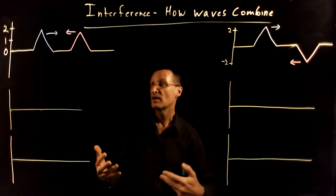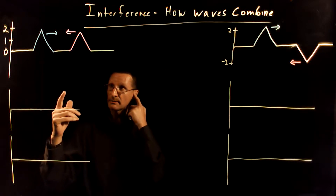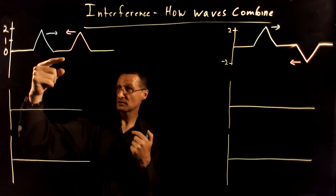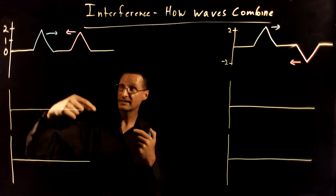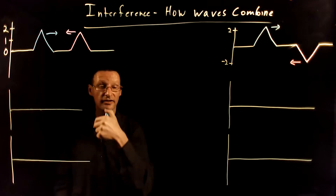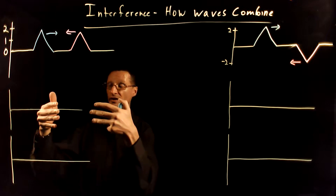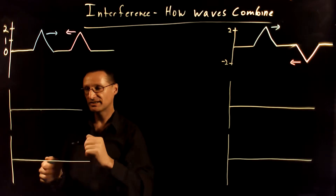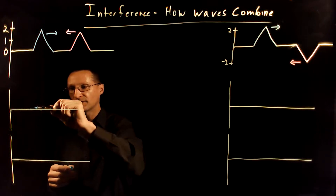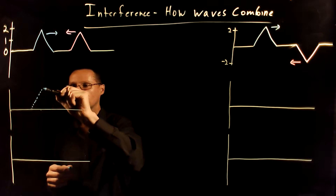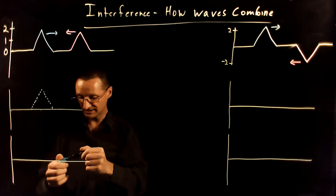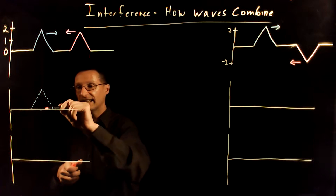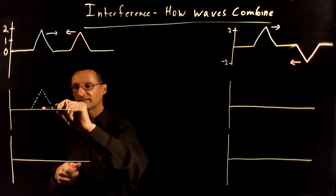So let's do an example. For these examples, let's imagine that this is a string. We have a blue wave pulse traveling to the right and a pink wave pulse traveling to the left on the string. Where these two wave pulses overlap, the string has to decide what shape to take. Here's the blue wave pulse — it has a height of positive two. And then there's the pink wave pulse, and it also has a height of positive two.